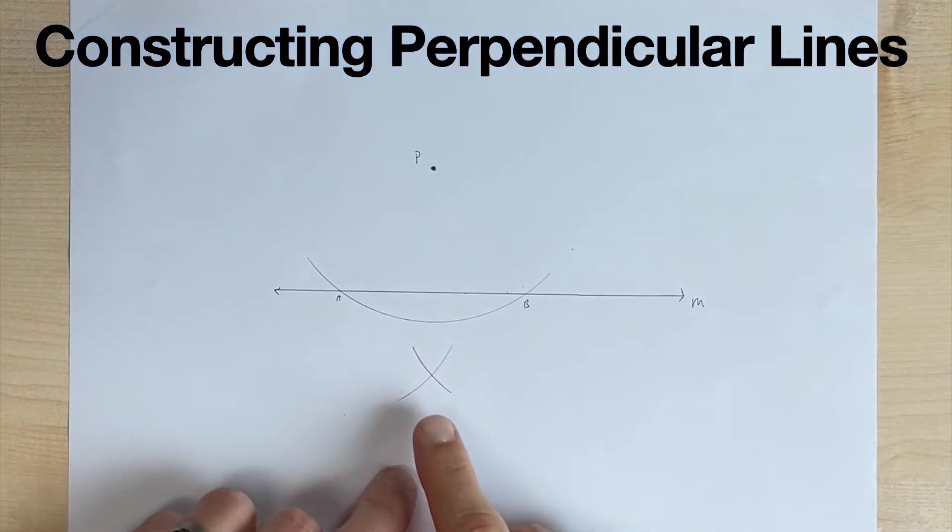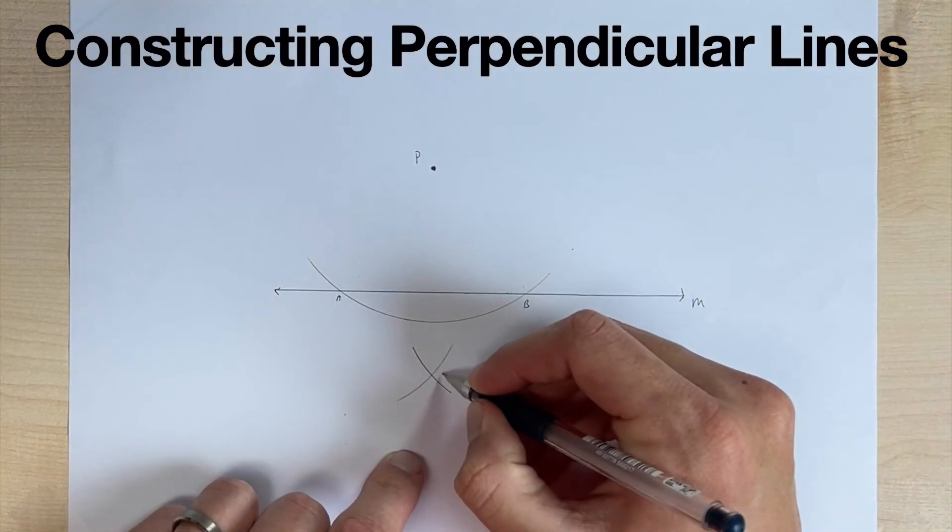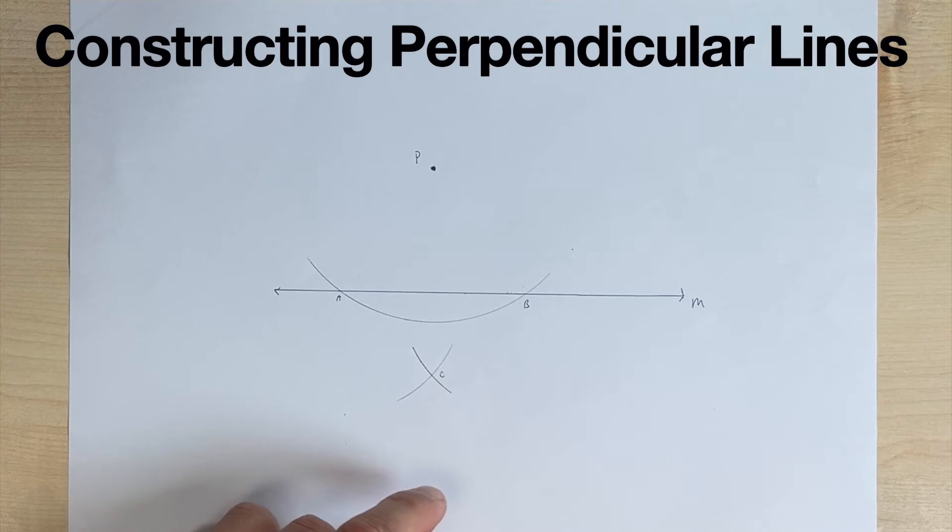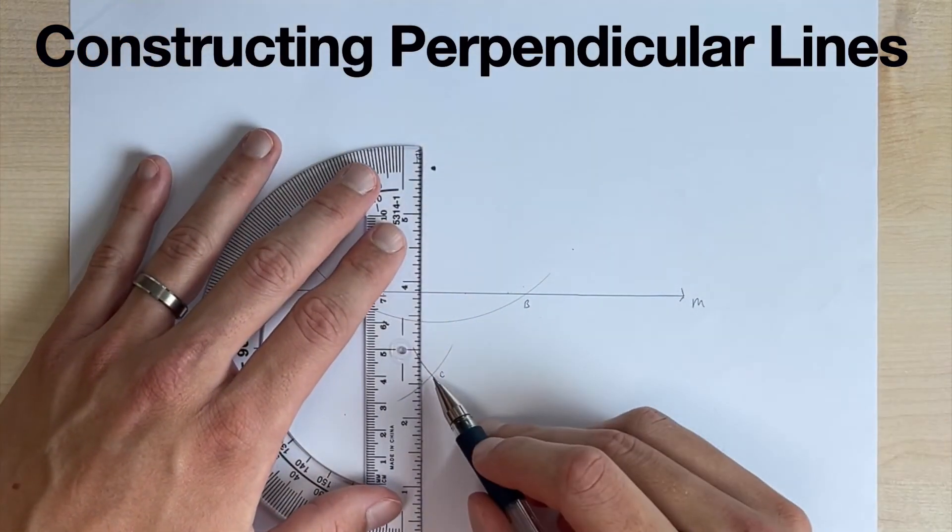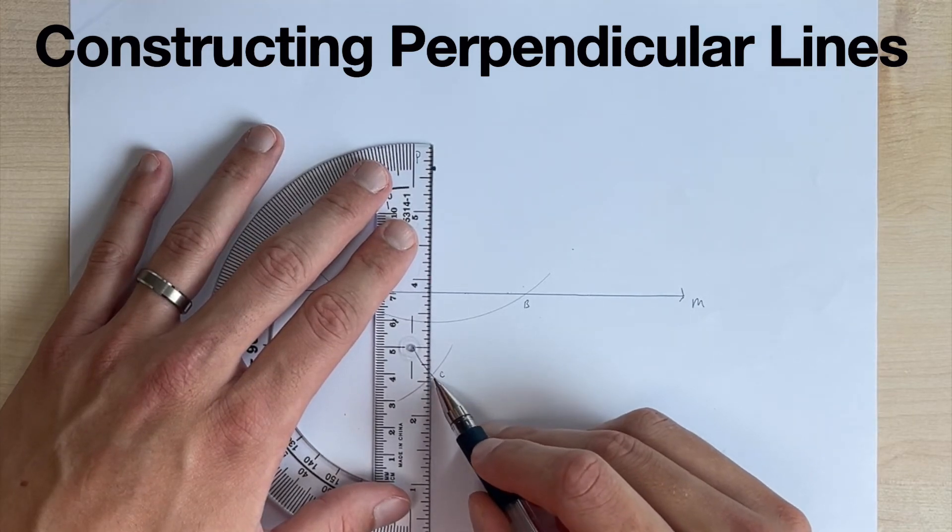All right. So now notice we have an intersection down here. We can call this intersection C. And now we're going to take our straightedge and we're just going to draw a line that goes through our intersection and our point P.